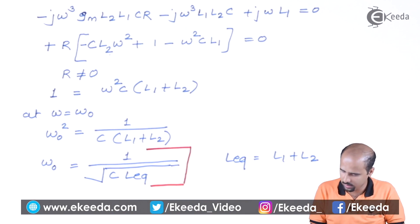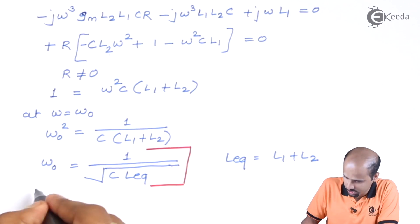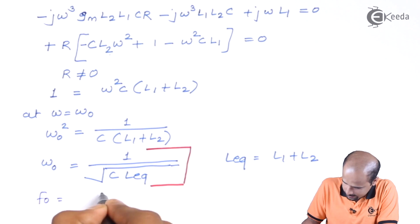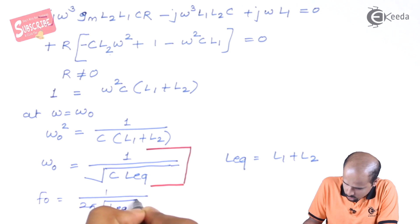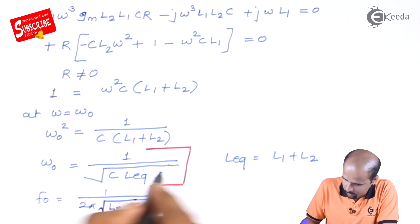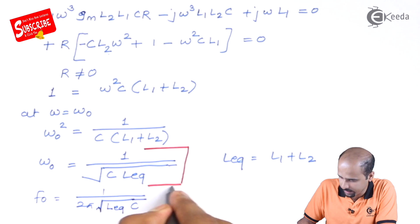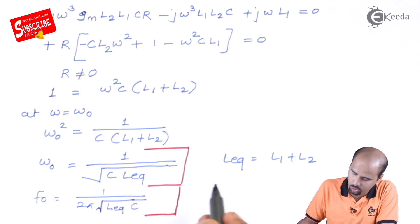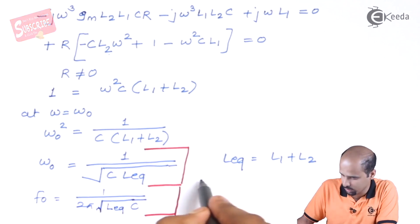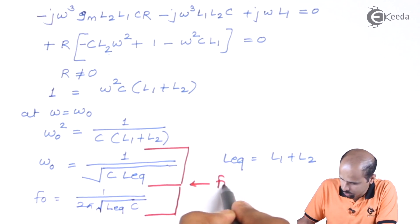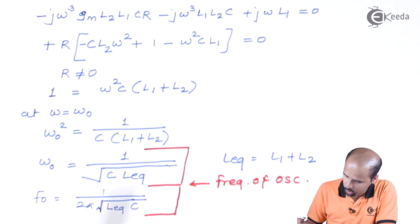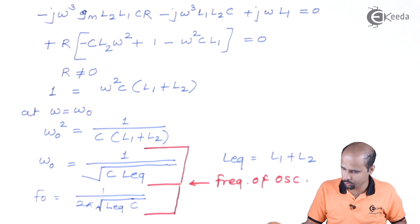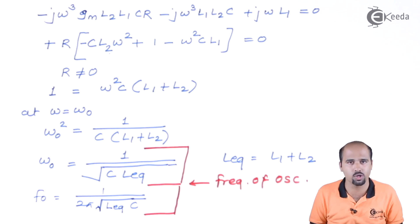The frequency of oscillation in Hertz is F0 = 1 / (2π√(L_eq · C)), where L_eq = L1 + L2. This is the first finding — the frequency of oscillation for the Hartley oscillator.